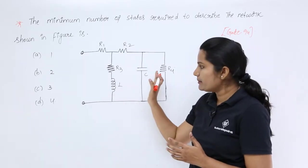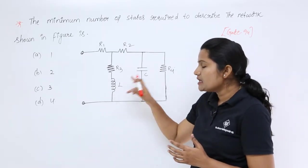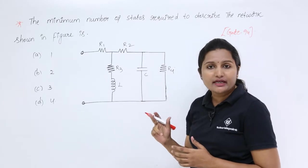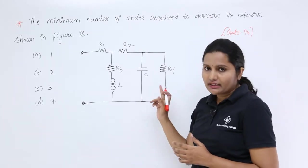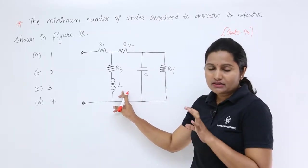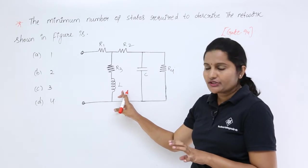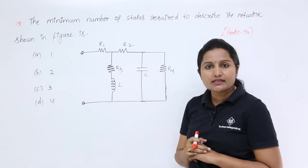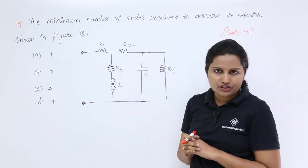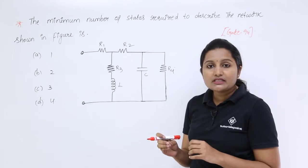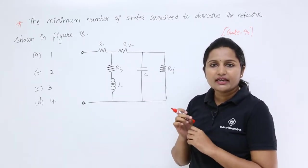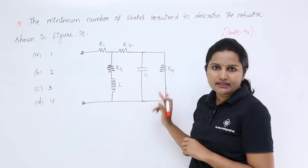How many memory elements are there in this network? We are having two memory elements. One is the inductor, which stores energy, and another one is the capacitor, which also stores energy. So these two will be considered as memory elements in the network.